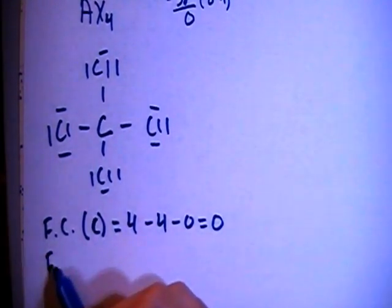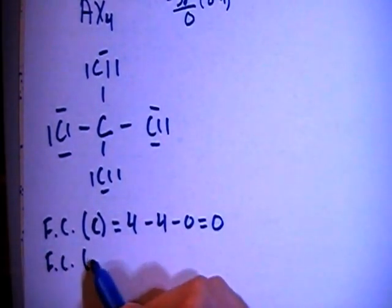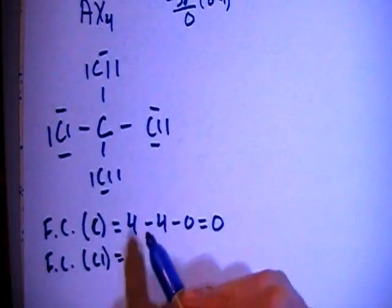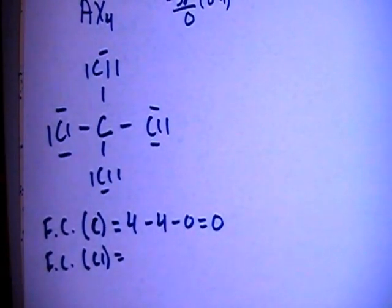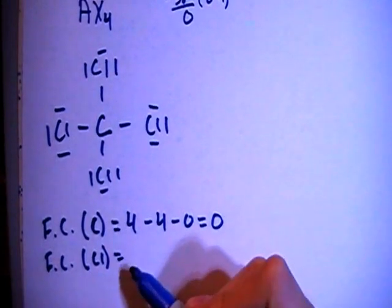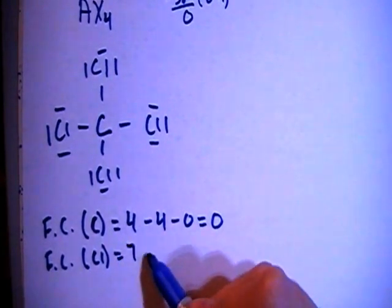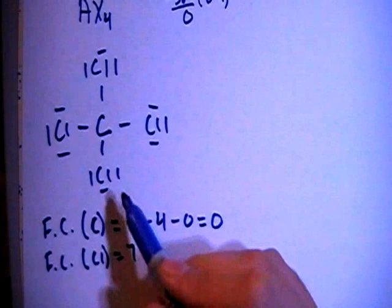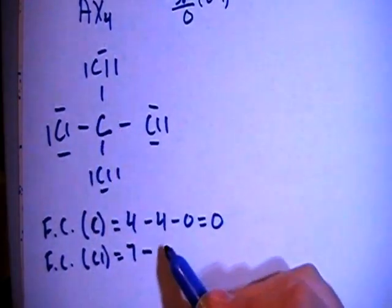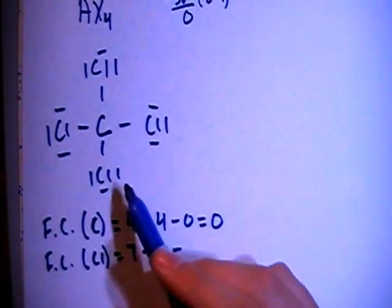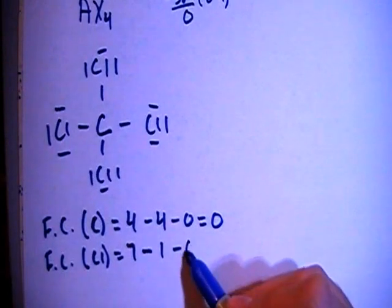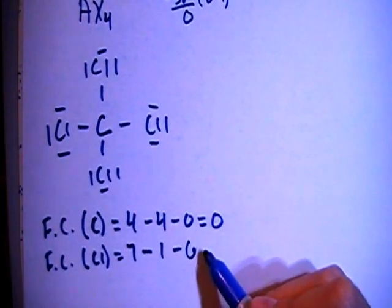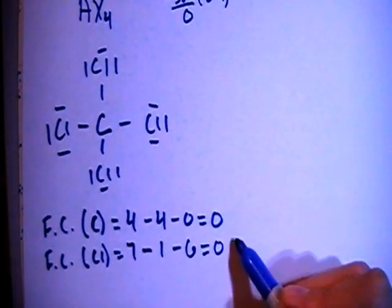Now we're looking at the formal charge of each of the chlorines, and notice that they all have the same setup, so their formal charges should all be equal. It's seven valence brought in minus one bond for each chlorine, minus one, two, three, four, five, six non-bonding electrons on each chlorine for a formal charge of zero.